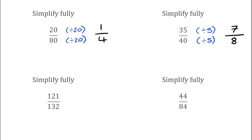For this next question we've got 121 over 132. The highest common factor here would be 11, as they're both in the 11 times table. So we're going to divide the top number by 11 and the bottom by 11. 121 is actually 11 squared, so 121 divided by 11 is 11 itself, and 132 divided by 11 is 12. So 121 over 132 simplifies to 11 over 12.